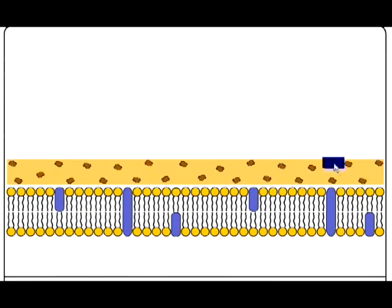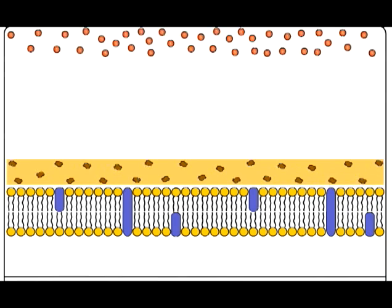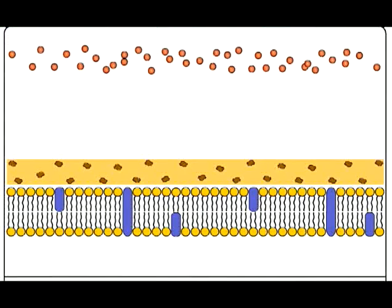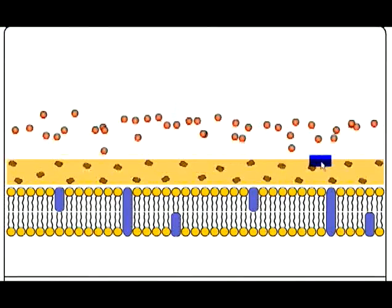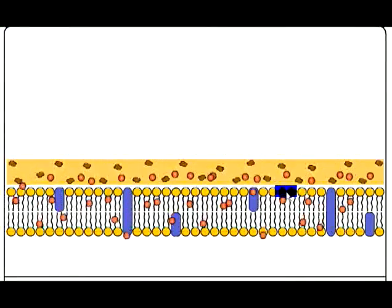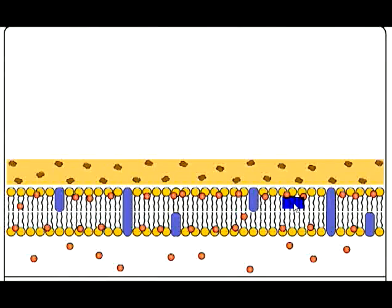When we add the counterstain safranin to the gram-negative cell, we'll see a very different pattern. So the safranin is a small molecule. It moves easily through that dehydrated peptidoglycan layer, and it binds to that phospholipid bilayer.